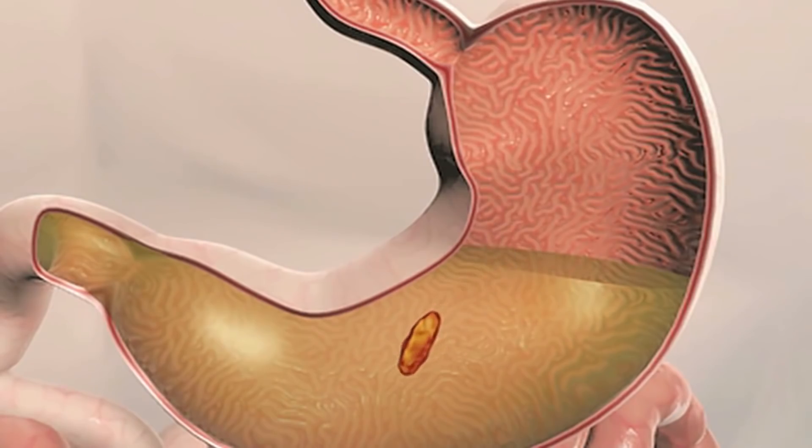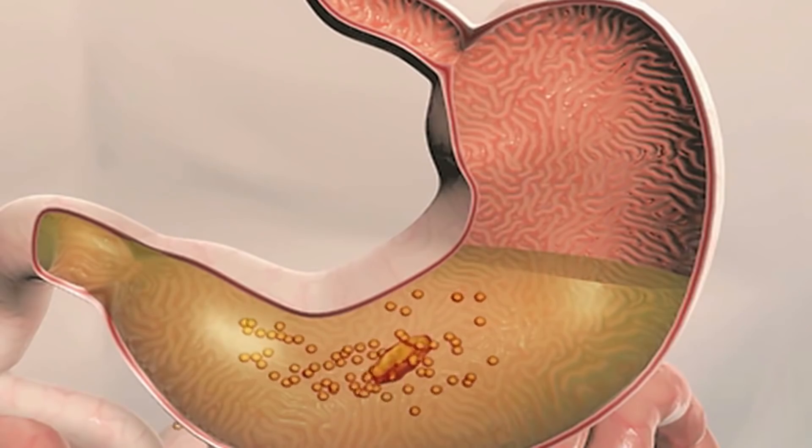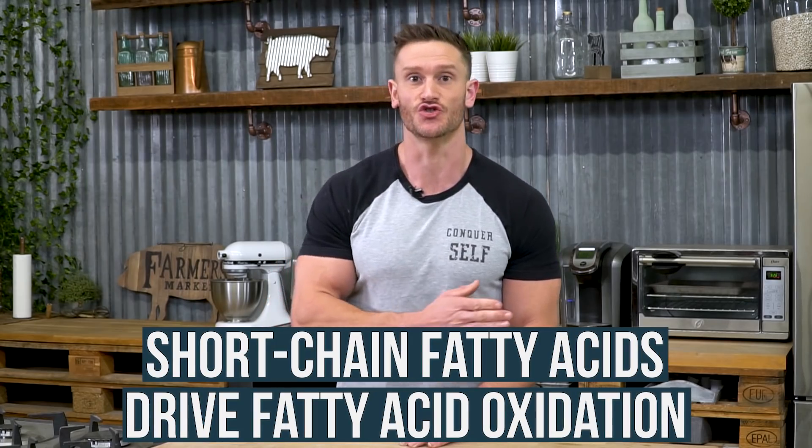We salvage energy from indigestible components. We may think that fiber doesn't really digest, but it does get broken down and ultimately fermented by our gut bacteria. The more diverse a gut microbiome we have, the more efficient we are at breaking those indigestible components down into what are called short-chain fatty acids — and short-chain fatty acids drive fatty acid oxidation, fat burning at the cellular level.